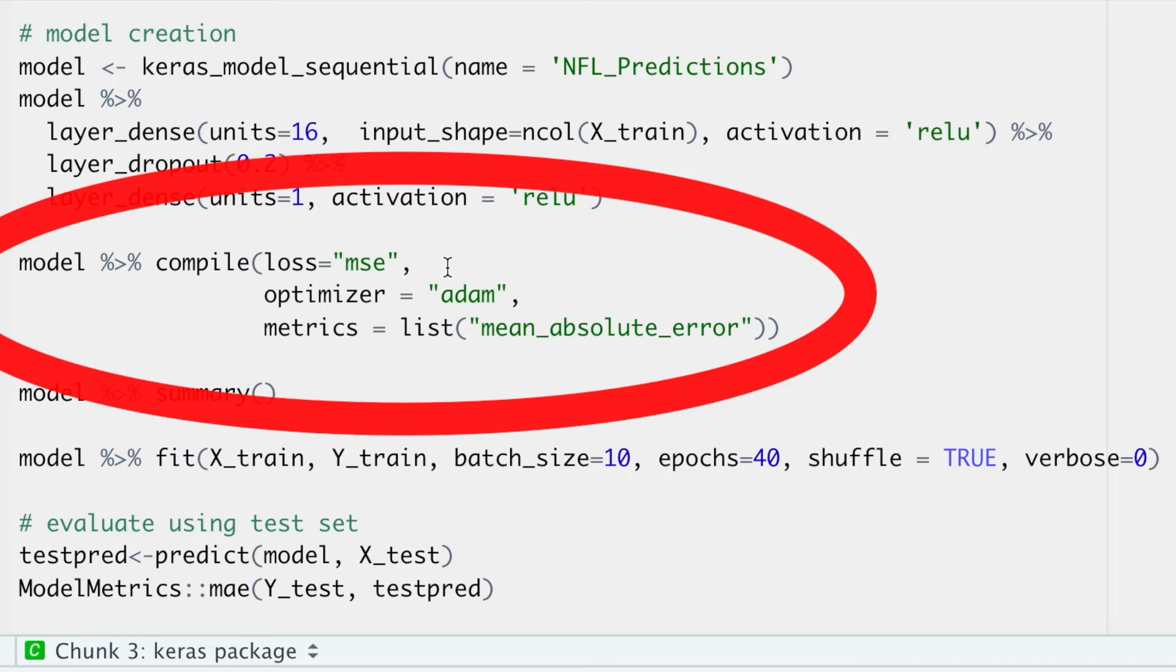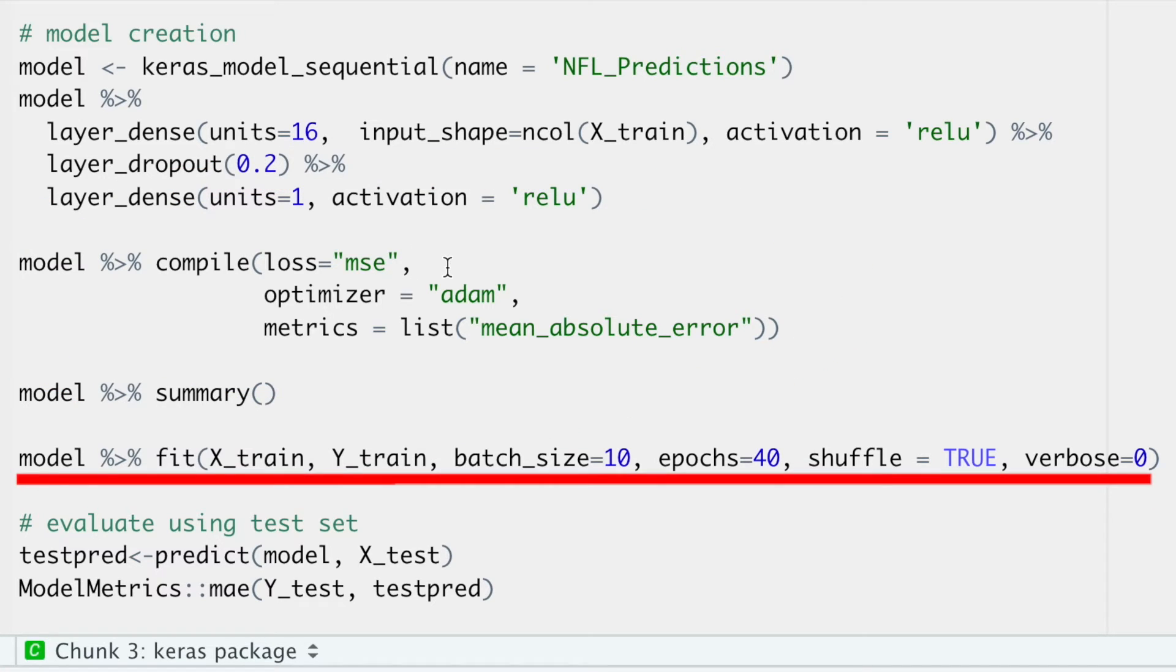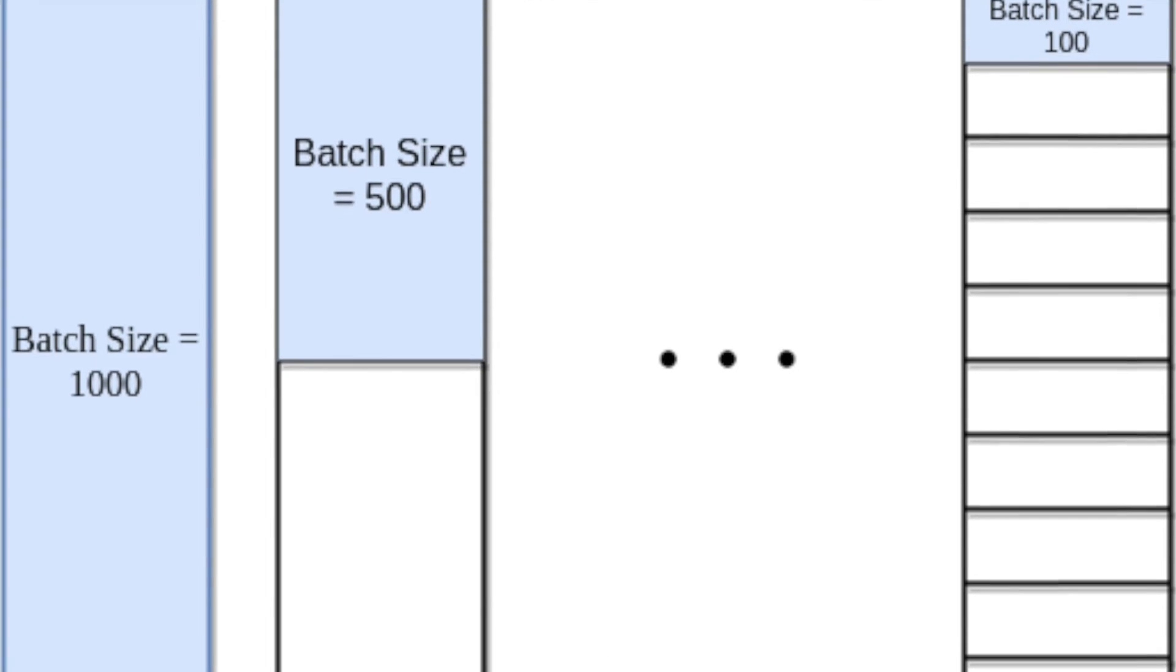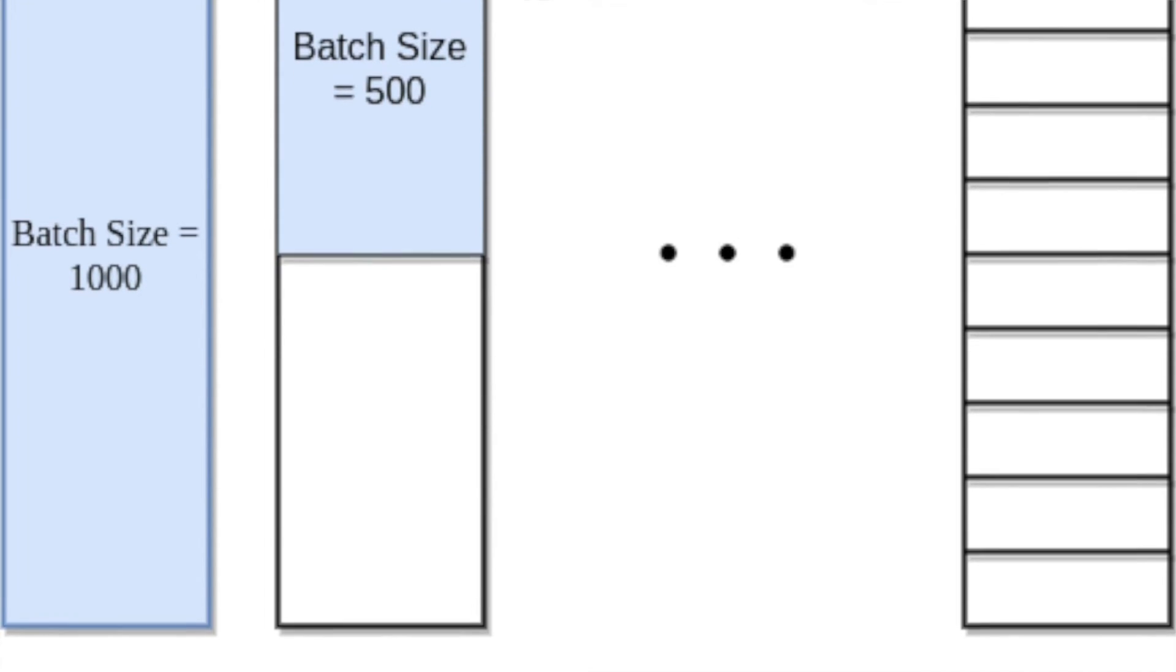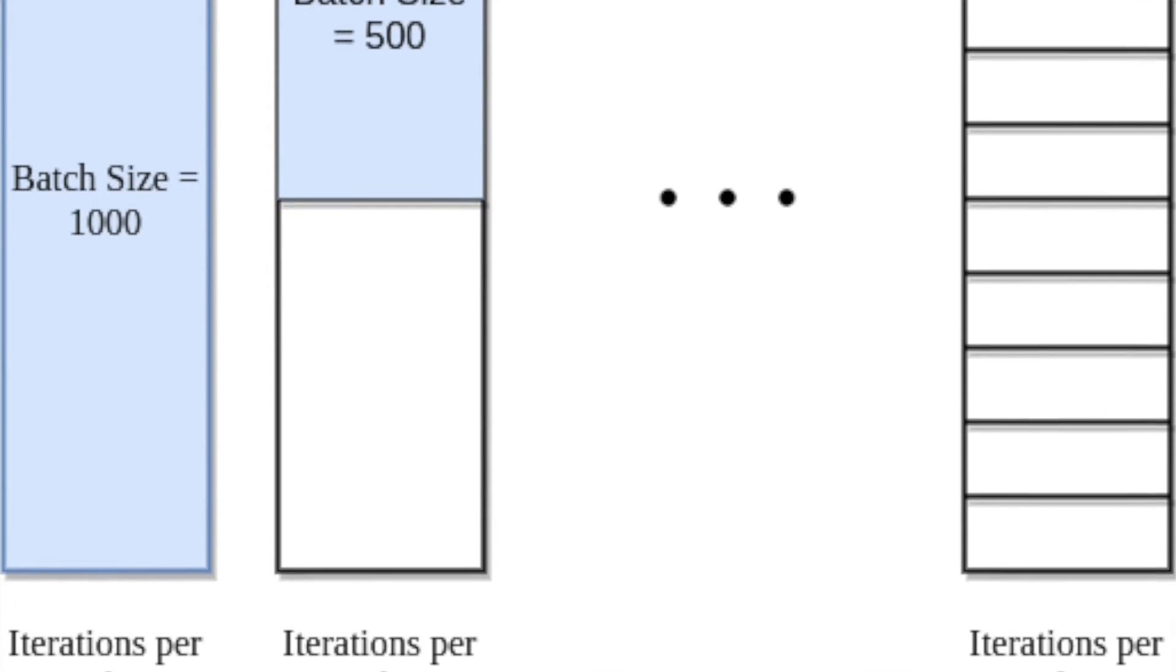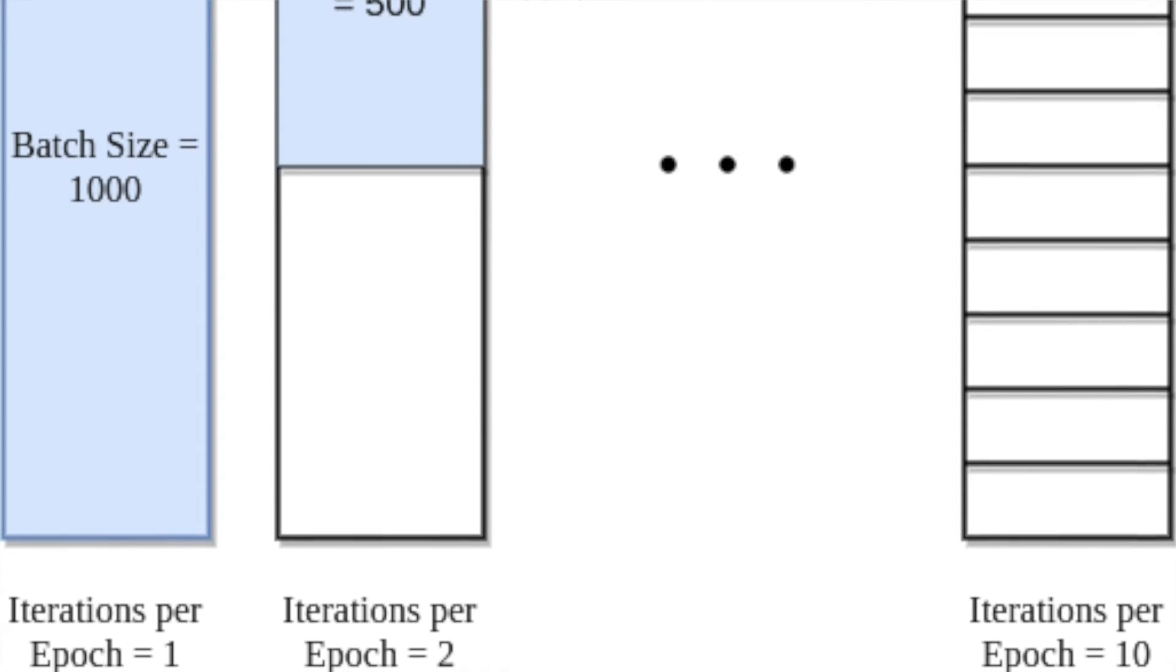Now is the part where we actually fit the model to the training set. We need to specify the training data, the labels for the data, the batch size, and the number of epochs. The batch size is the amount of observations that will be fed through the network before the weights are adjusted, and the number of epochs is the number of times the complete data set will be fed through the network.